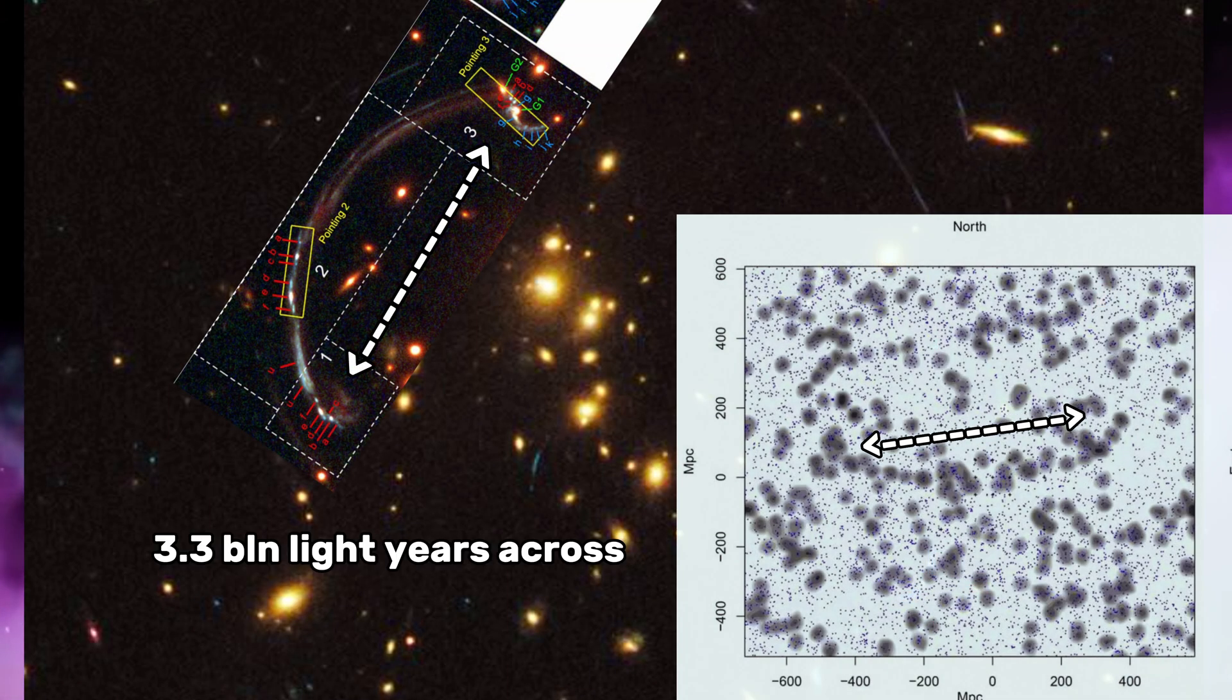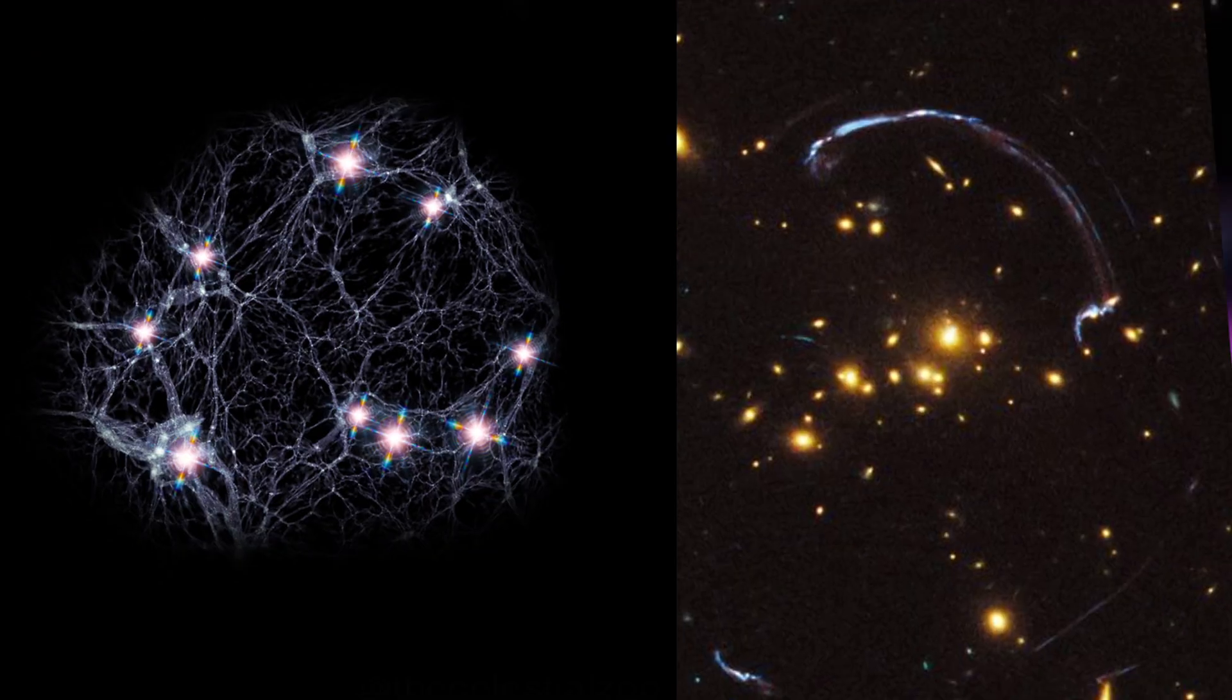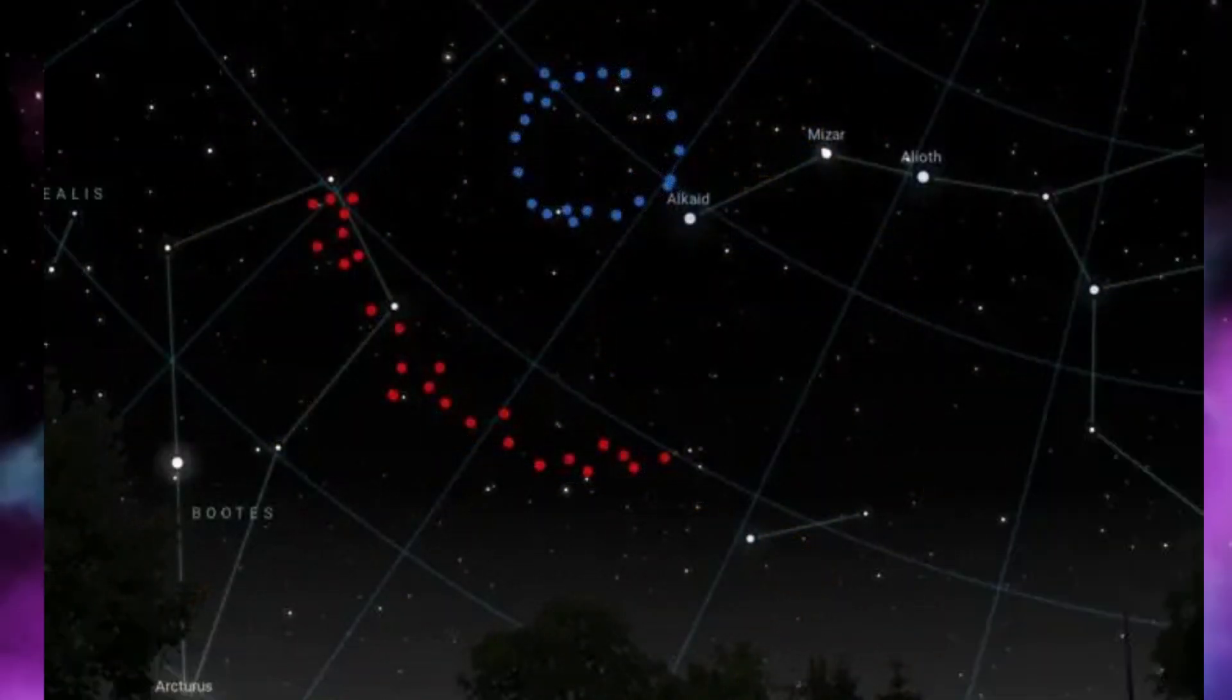Which is even larger, with 3.3 billion light-years across. Both the Big Ring and the Giant Arc are in the same cosmological neighborhood, which means that they are seen roughly in the same distance from Earth.